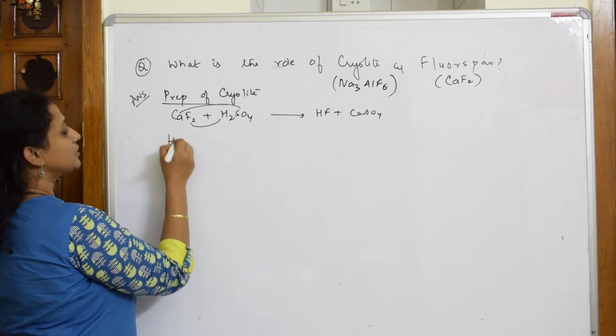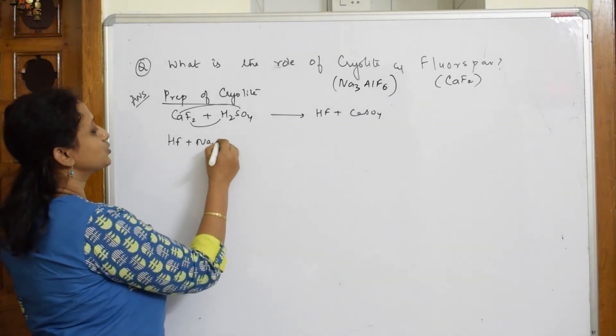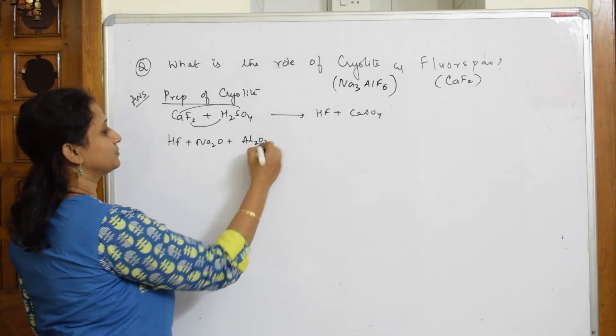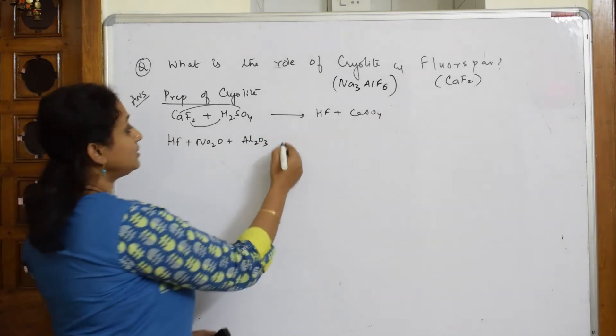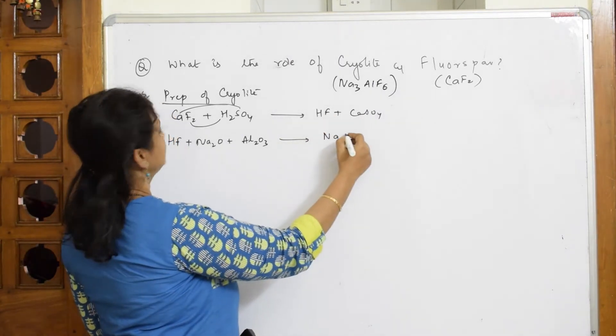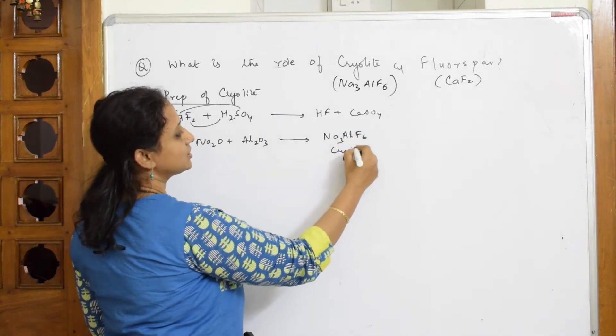Now, that hydrogen fluoride, what do we do? I am going to add two important oxides. One is Na2O and aluminium Al2O3. Then you get a compound called Na3AlF6. This is your cryolite.